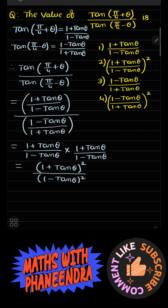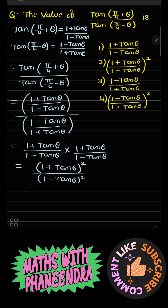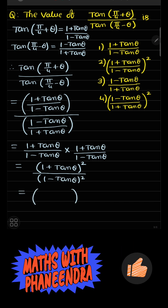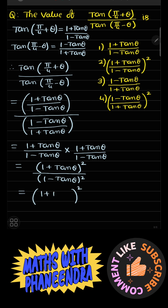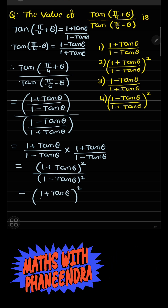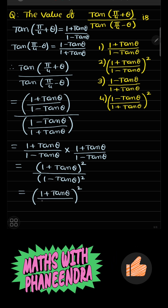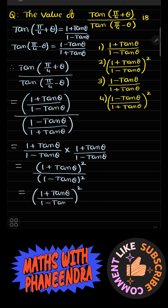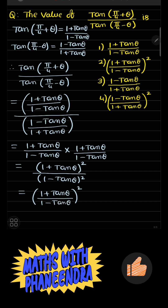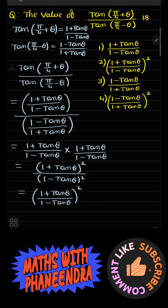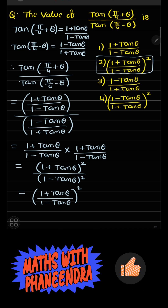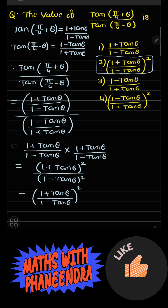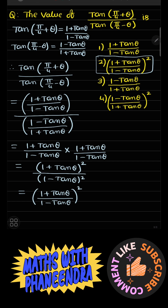So, which is equal to (1 plus tan θ) divided by (1 minus tan θ), times (1 plus tan θ) divided by (1 minus tan θ), giving us (1 plus tan θ) squared divided by (1 minus tan θ) squared.